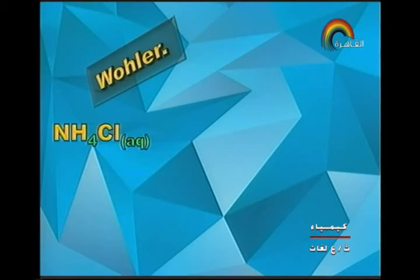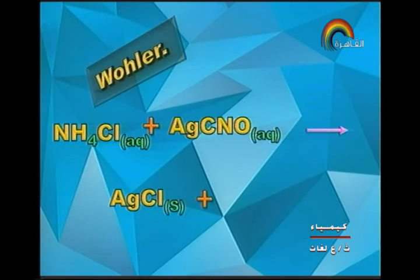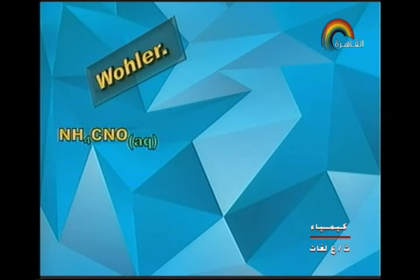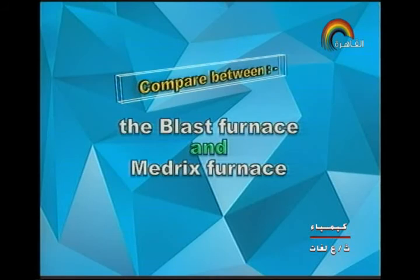Wöhler destroyed the vital force theory by preparing urea in the lab. Ammonium chloride reacts with silver cyanate giving silver chloride and ammonium cyanate. Then ammonium cyanate by heating gives urea.